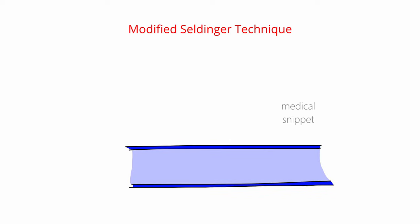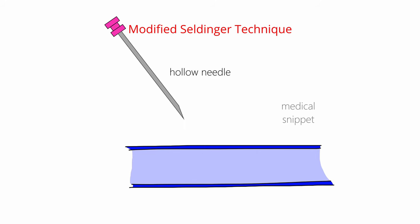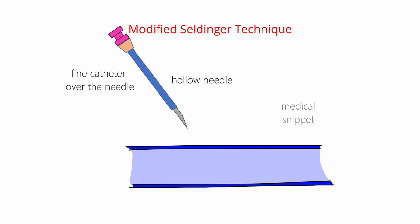Let's move on to the modified Seldinger technique. It is usually used to insert a central venous line in neonates, as the vessels are very small in neonates. Even after a successful puncture of the vein with the needle, the needle may get displaced while passing the guide wire into it. To avoid this problem, a fine catheter over the needle is used to puncture the vein.